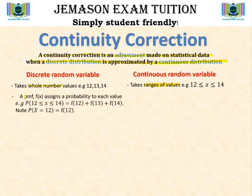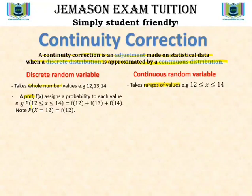The second difference is the way probability values are assigned to each value in each case. In the case of discrete random variables, there is a PMF — a probability mass function f(x) — usually a discontinuous function that assigns probability values to each of the values the discrete random variable can take. To find the probability of a particular value, for instance P(x = 12), it would just be f(12).